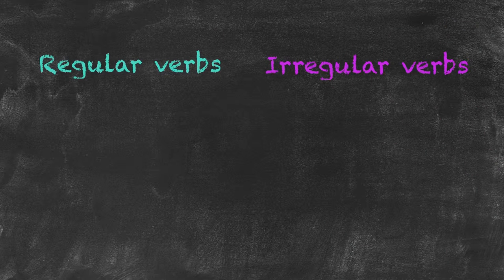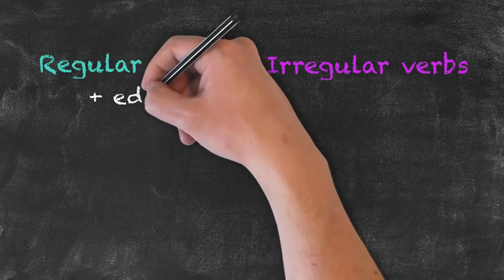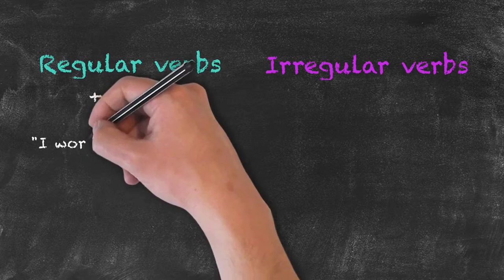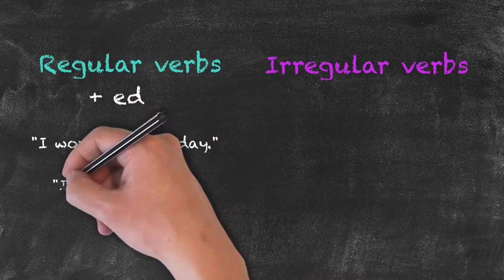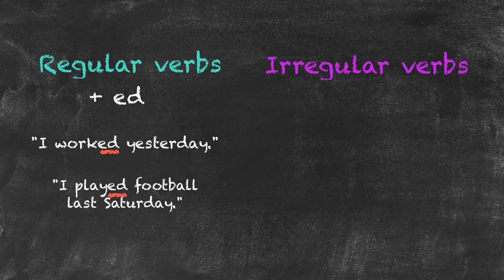With regular verbs, in order to conjugate the verb into the past, we simply add ED — we need not do anything more. For example: 'I worked yesterday.' 'I played football last Saturday.' It's always the ED form.